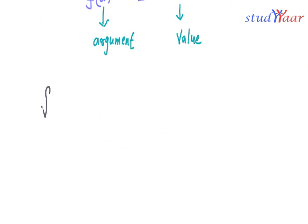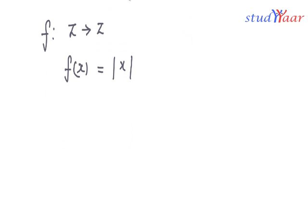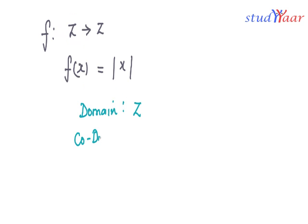Let us take an example. Suppose I have a function f from Z to Z, represented as f(x) = |x| — the modulus function. In this case, the domain is Z itself, which is the set A. The codomain is also Z, on the right-hand side.